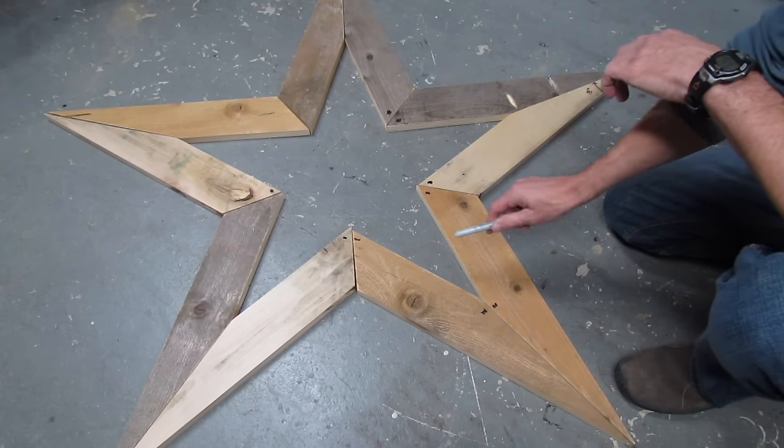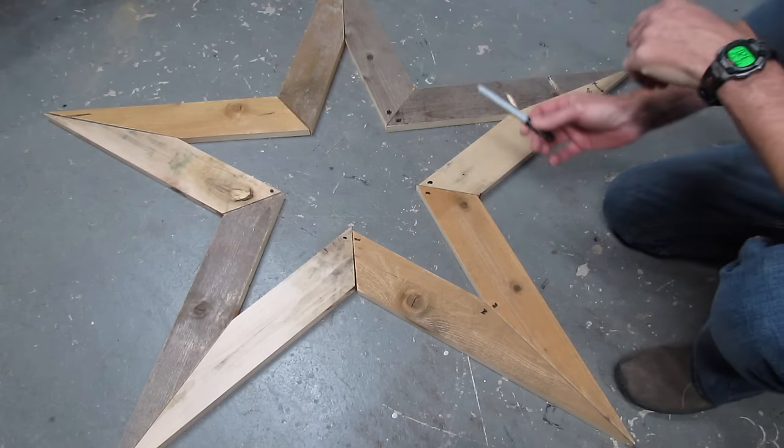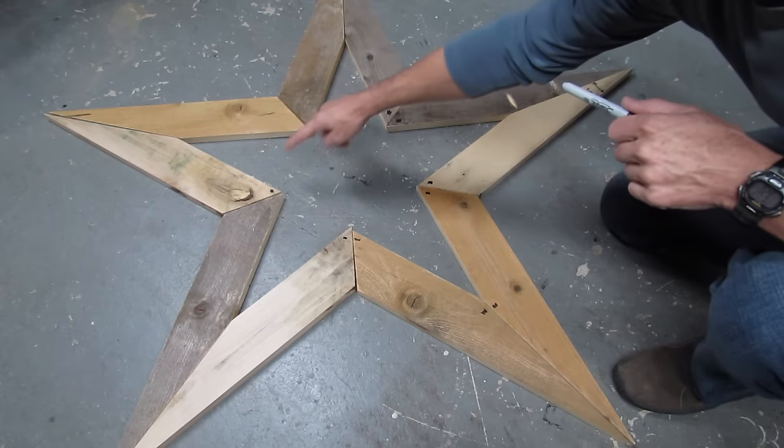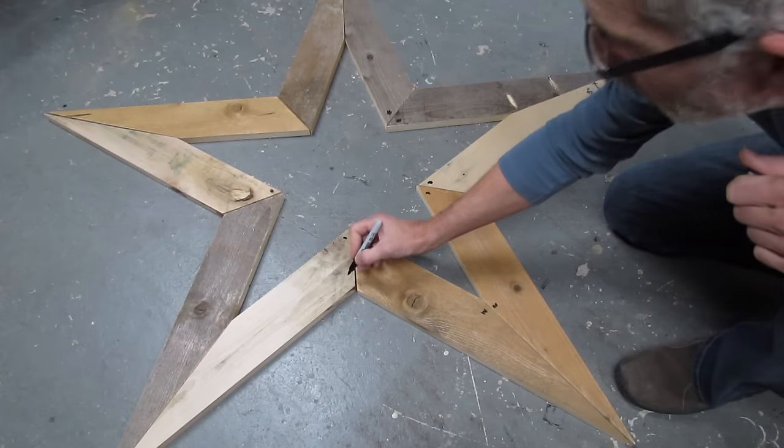So once you have the best side facing down and the cruddy side facing up, just go around with a sharpie or a pen and just mark all of the inner parts of the star so that you know how they go back together.